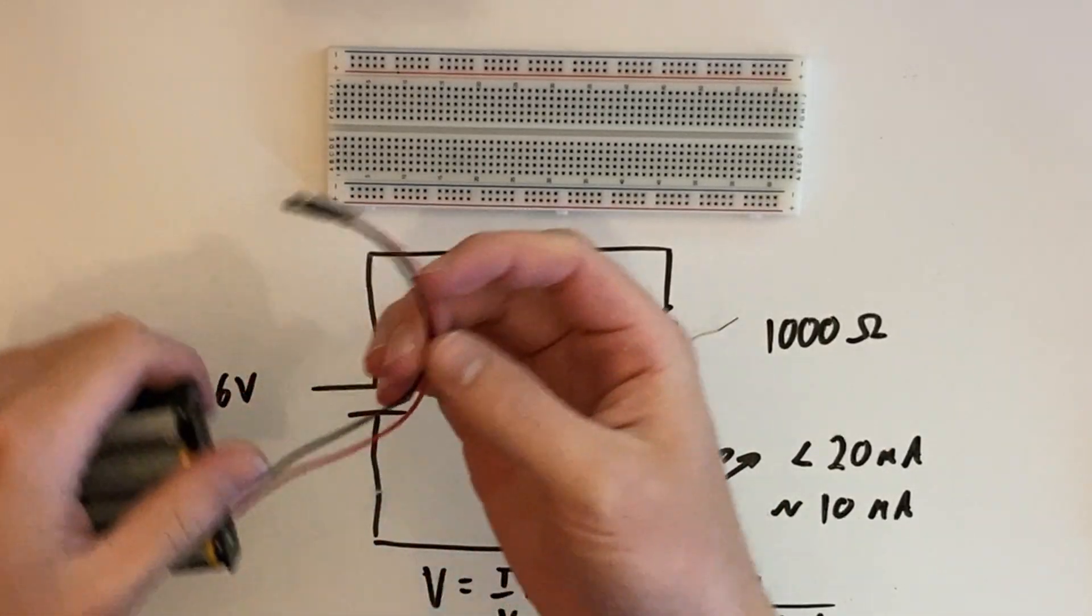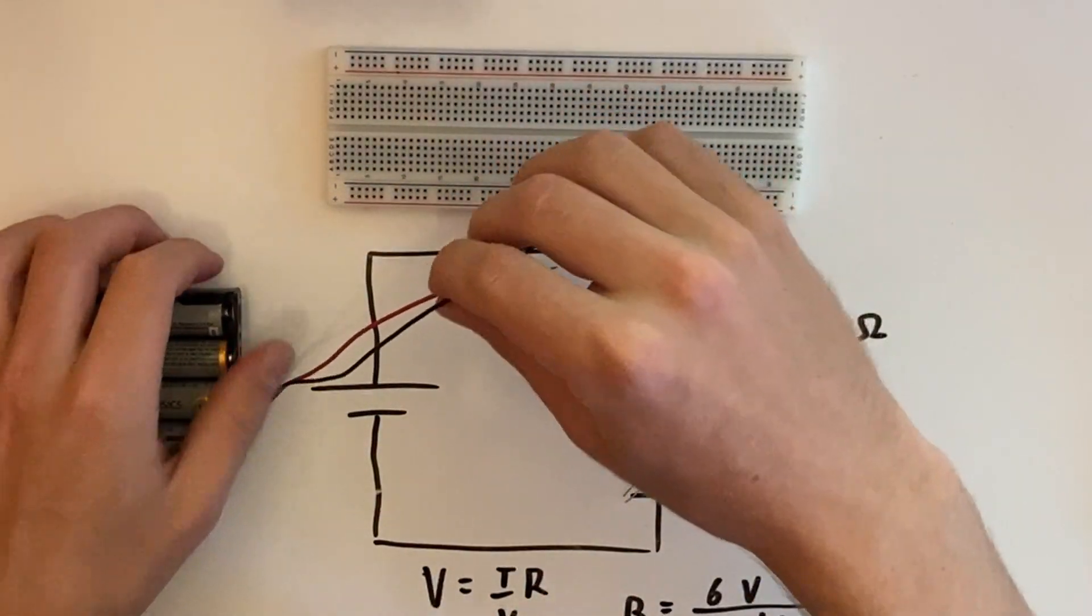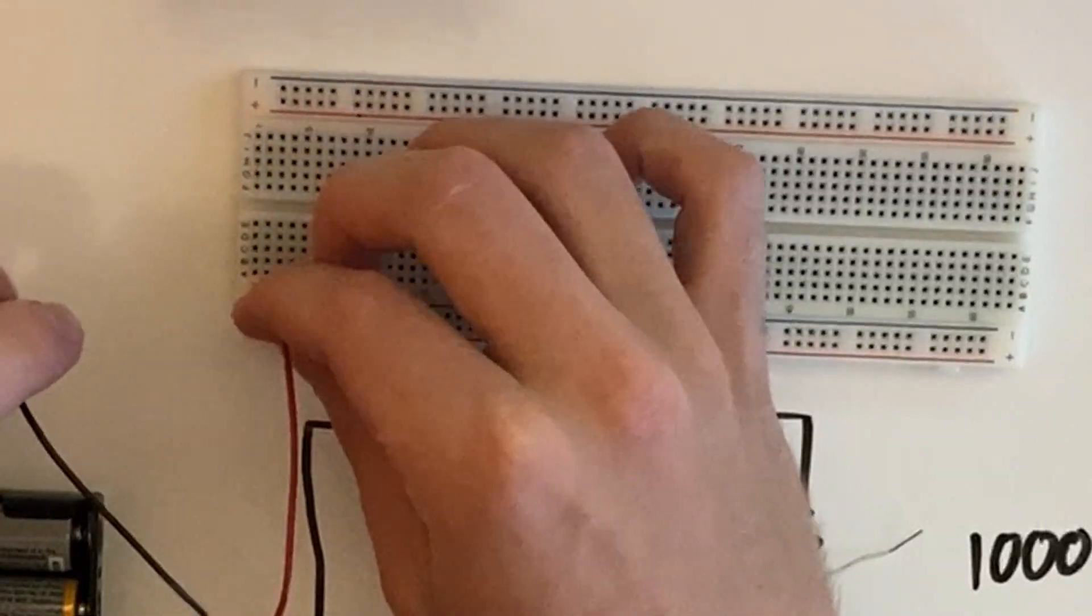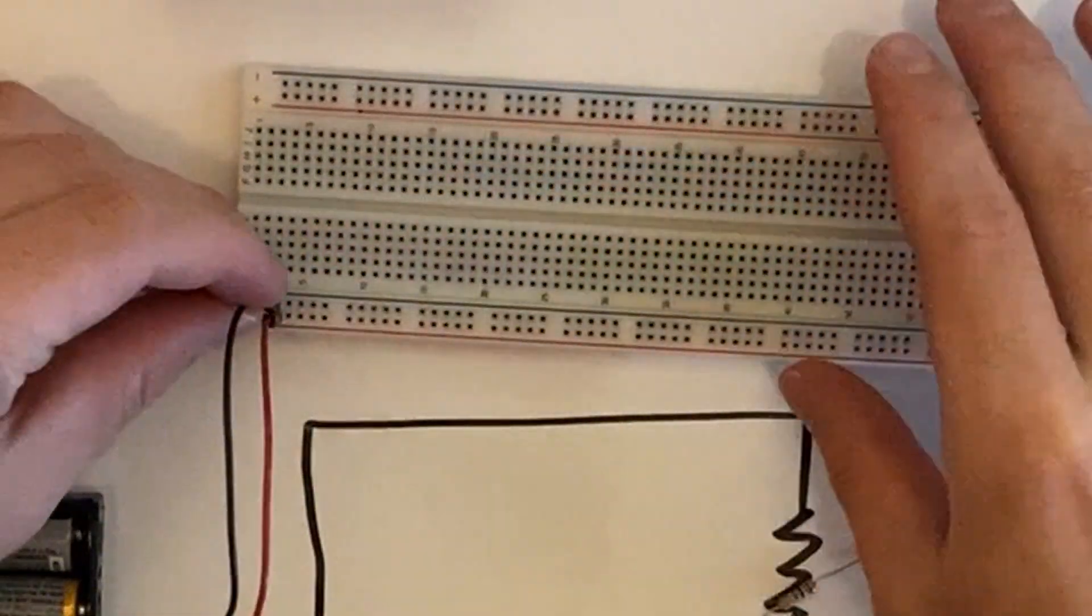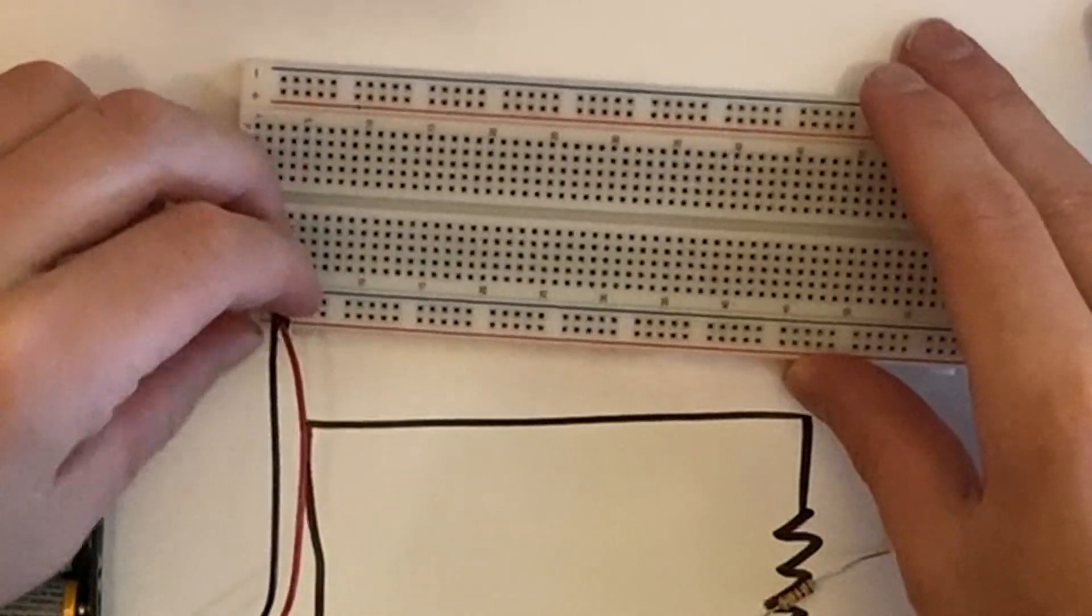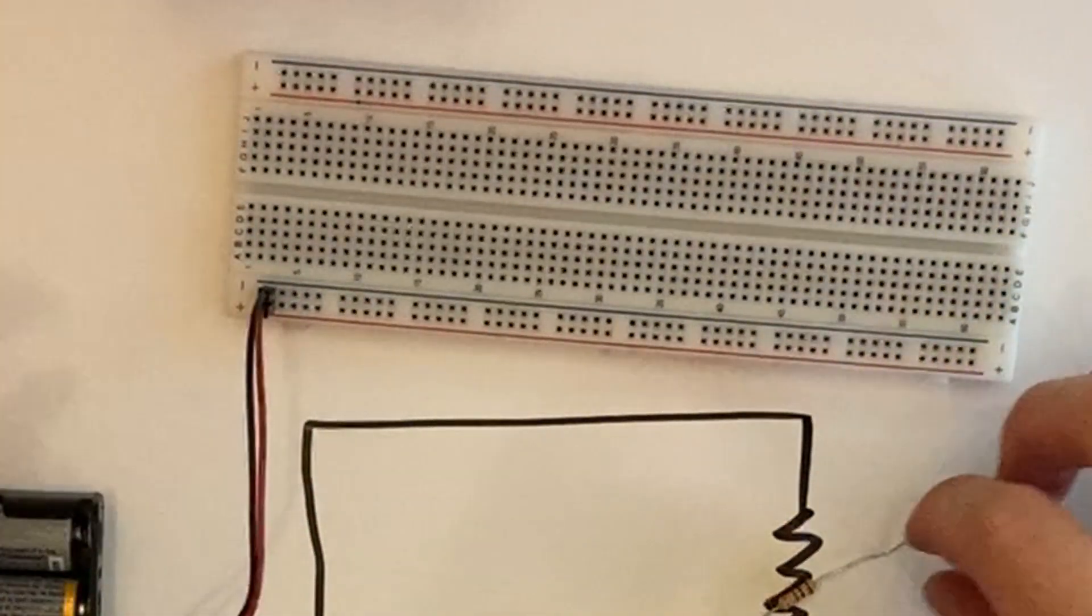Next comes the fun part, putting together the circuit. If you have a breadboard, your first step should be to connect the positive and negative terminals of the battery along the red and blue strips respectively. This will power the entire strip.